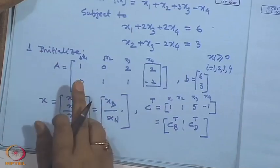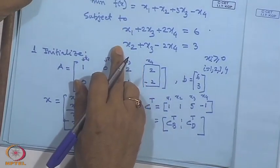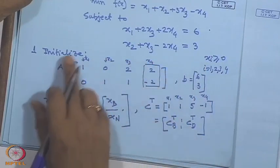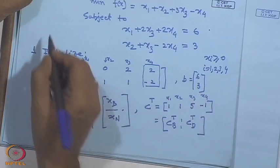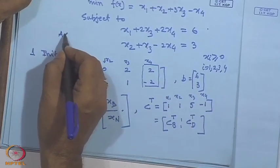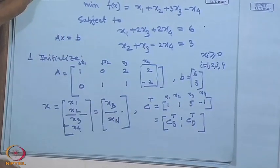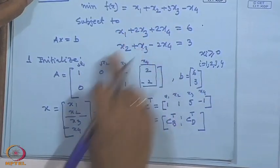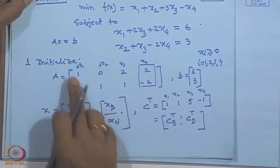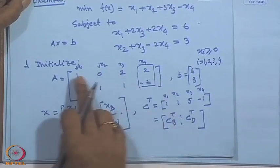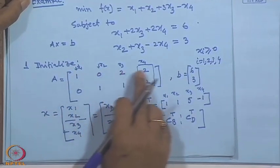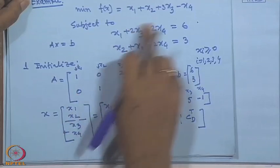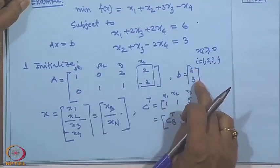What we have to do first is write these two linear equations into matrix and vector form, that means we write it in the form Ax = b. Looking at the two expressions, the A matrix is [1, 0, 2, 2; 0, 1, 2, -2] and b is [6, 3].